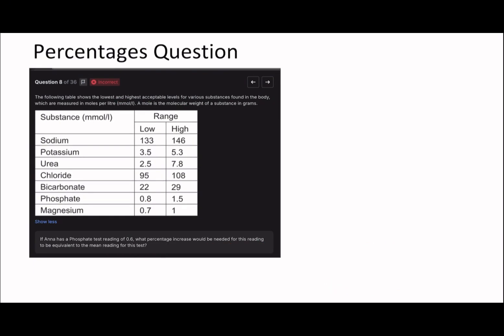If Anna has a phosphate reading of 0.6, what percentage increase would be needed for this reading to be equivalent to the mean reading for this test? So let's have a think about this question. I think they've worded this question badly in terms of what they mean about the mean reading, because they don't really say about the mean anywhere. But I think based off the numbers you're given, the only two other values you have about phosphate are 0.8 and 1.5, so you find the mean between them by adding them together and dividing by 2.